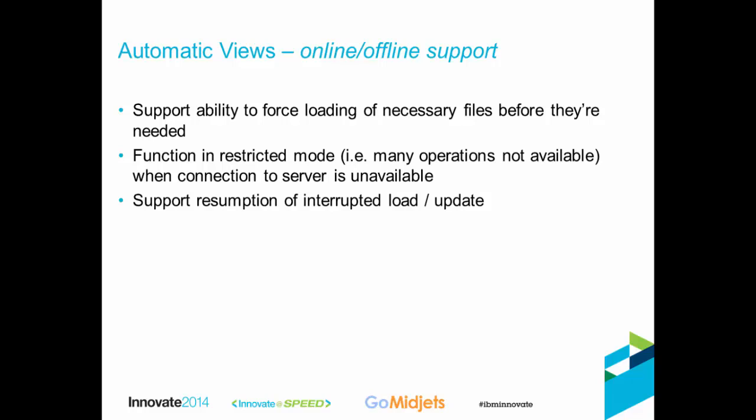When in offline mode, the automatic view functions in a restricted mode. Operations that require interaction with the VOB servers — such as getting metadata associated with a version — would not be possible, but they become available again once you reconnect to the network. Another request is the ability to support resumption of interrupted load or update operations. With WebViews or snapshot views today, if there's a network failure mid-load, you have to restart the entire operation. Automatic views use a new algorithm that allows resuming interrupted updates, which can be a performance win as well.